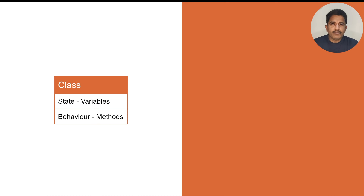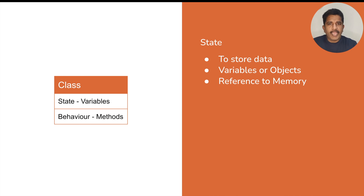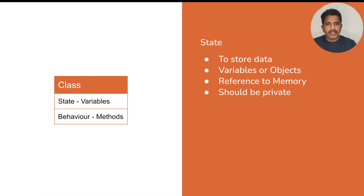Now let's discuss how we can make a class entity secure. A class is a combination of state and behavior, or variables and methods. State is something where we store data — we use variables or objects for that. Variables are simply a way of referencing memory locations, meaning a variable is just an easier name to remember which refers to a memory location storing some data. Since this is direct access to memory, we should make it private.